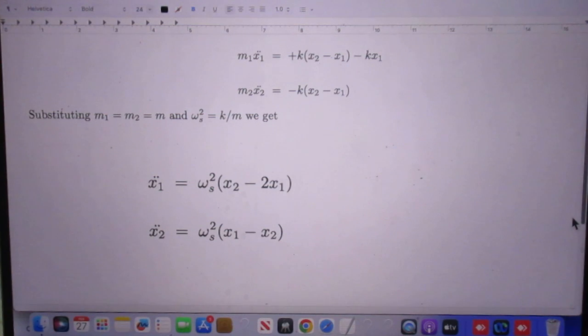We now substitute for K over M omega S squared. Remember from high school, if you have a simple spring, we ignore the mass, we always ignore the mass of the spring, and a mass M at one end, and we let it oscillate, which is a simple harmonic motion, and the frequency is the square root of K over M. So the frequency squared is K over M.